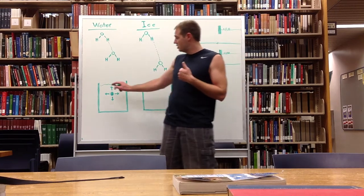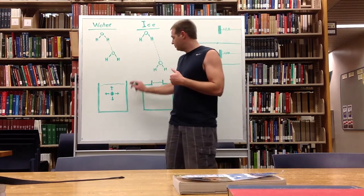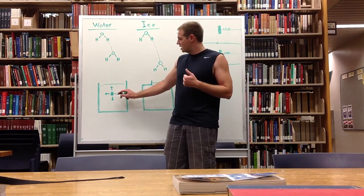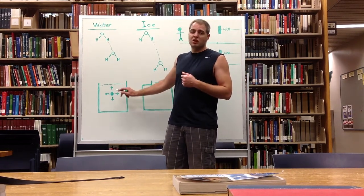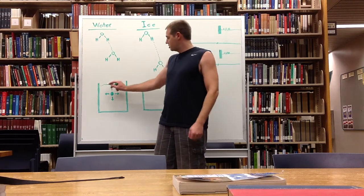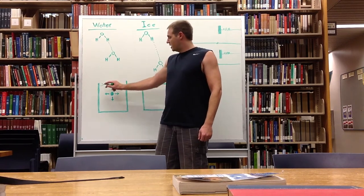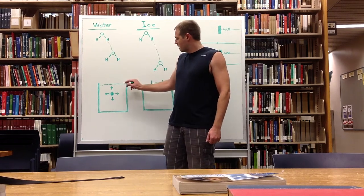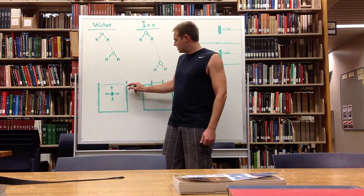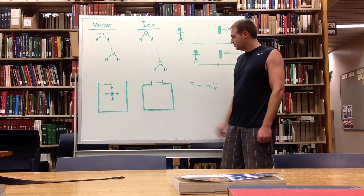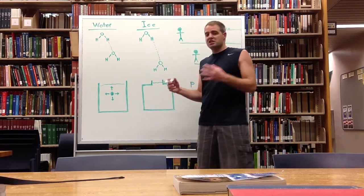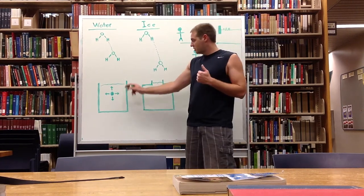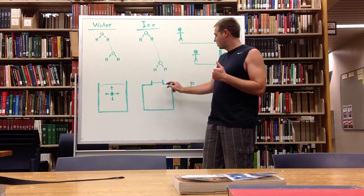Another thing we could do is manipulate the shape of our vessel. When I was talking about the expansion being in the direction of free space, that assumes that there is some free space. If the interchange between the liquid and air were not large — as in this example — but were maybe a little bit smaller,